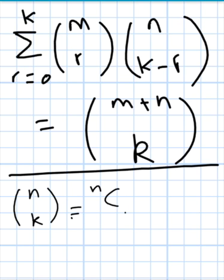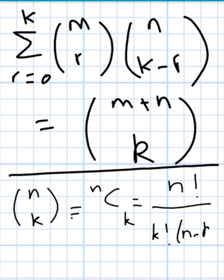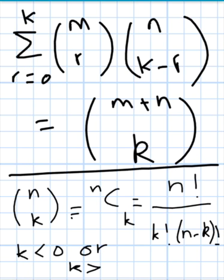Just a quick recap: n-choose-k is also written as nCk, which equals n factorial over k factorial times (n minus k) factorial. In order to prove this, we will use two simple facts: if k is less than zero or k is greater than n, then this combination equals zero.